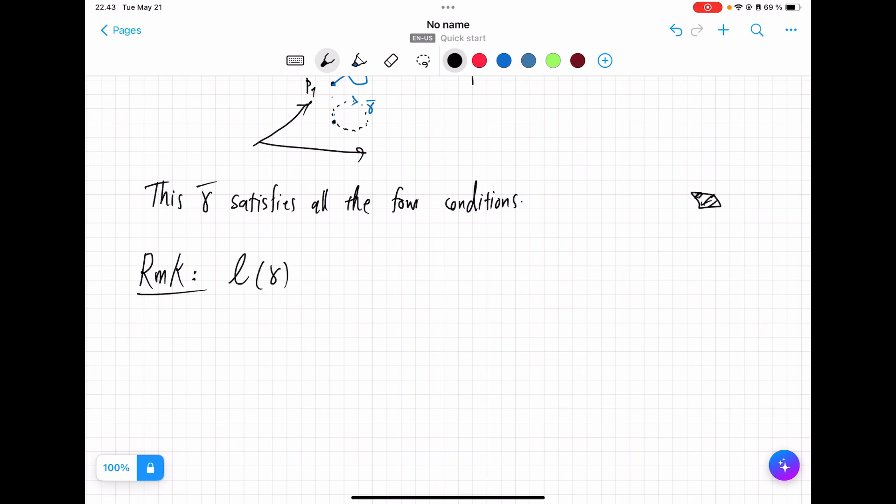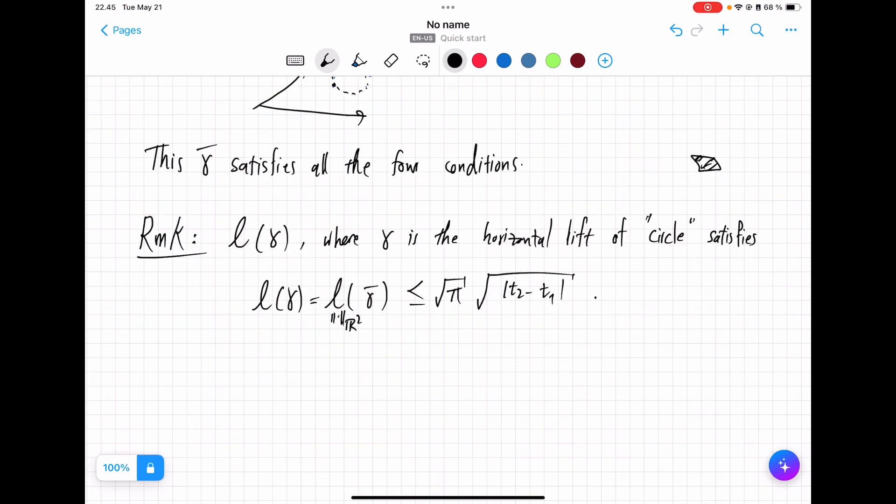So the length of the horizontal lift where gamma is the horizontal lift of the circle, the parameterization of circle, satisfies: length of gamma is equal to the length in R2 of its projection gamma bar, that is perimeter of a circle, and perimeter of a circle is bounded up to a constant which we can calculate. Indeed, I'm going to give you that constant: square root of pi times the square root of T2 minus T1.